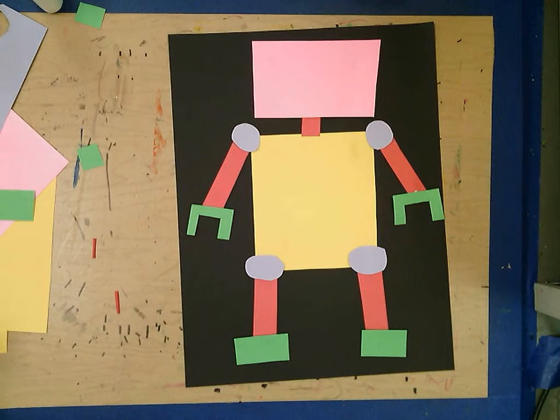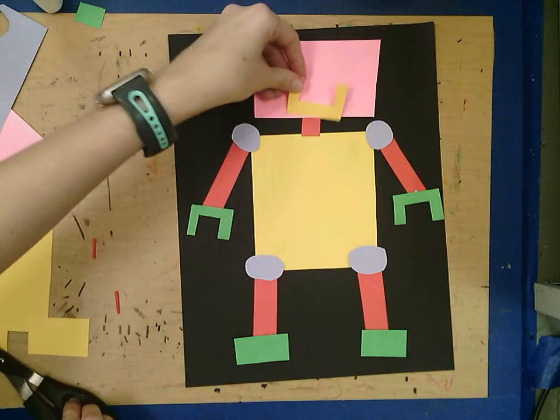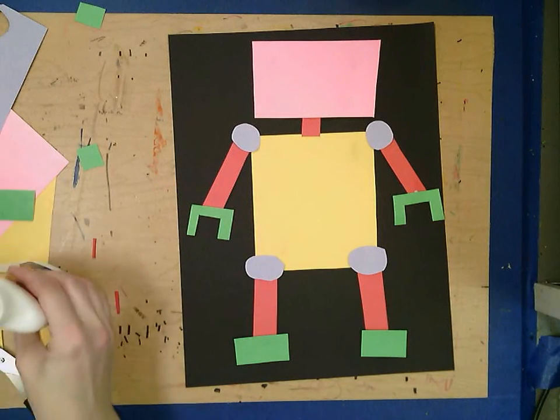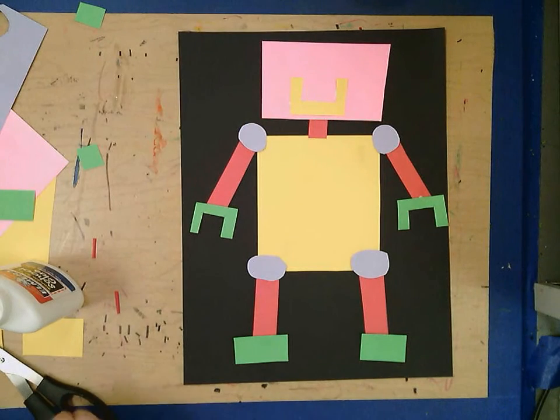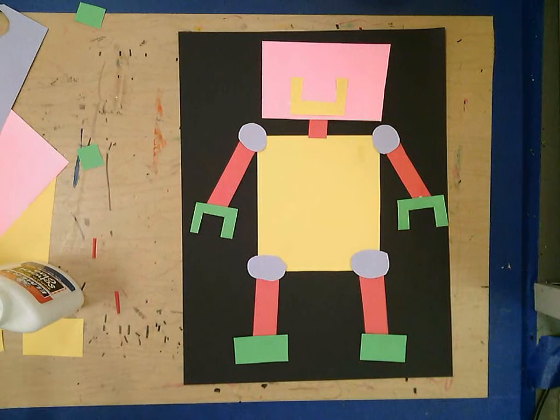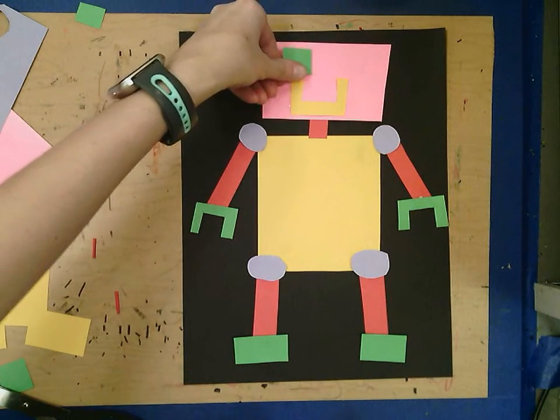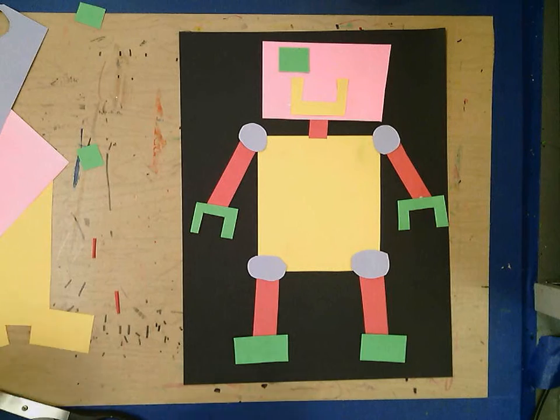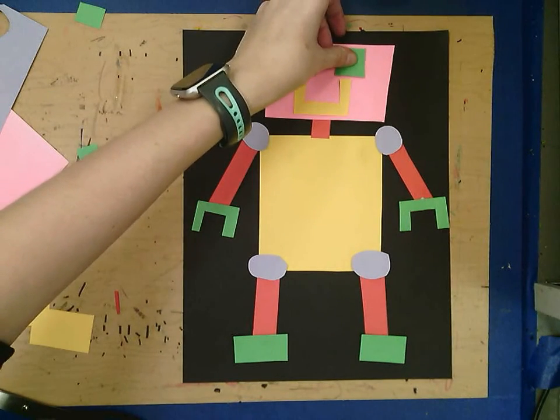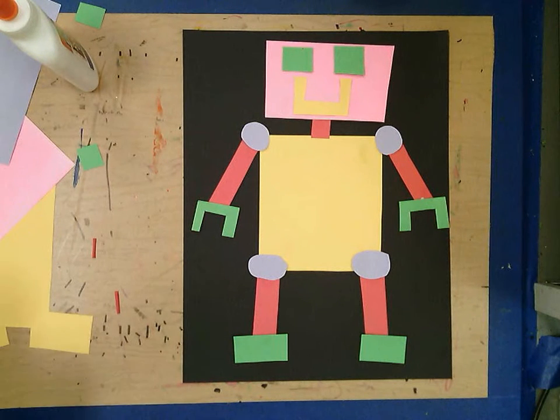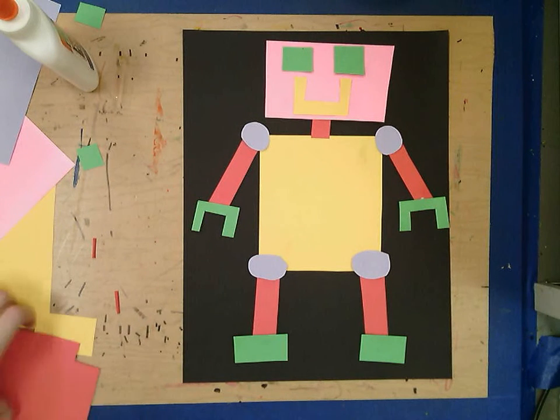And maybe some little eyes. There we go. I think the last thing I'm going to do is add some lights sticking off the side of my robot, almost like ears.